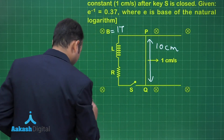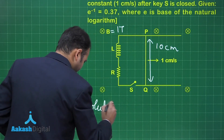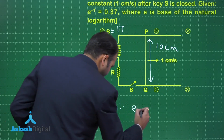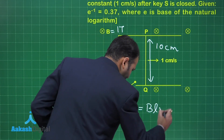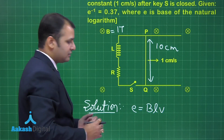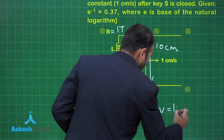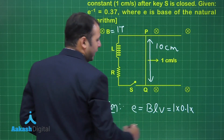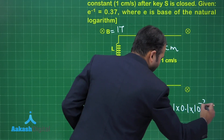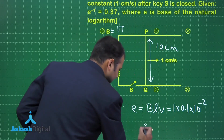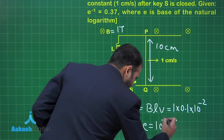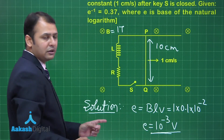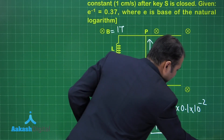To find the current, we first need to find the EMF. The magnitude of EMF is simply BLV. That equals 1 into 0.1 (the length) into 1 centimeter per second (the velocity), which gives 10 to the power minus 3 volts. So we have the EMF.